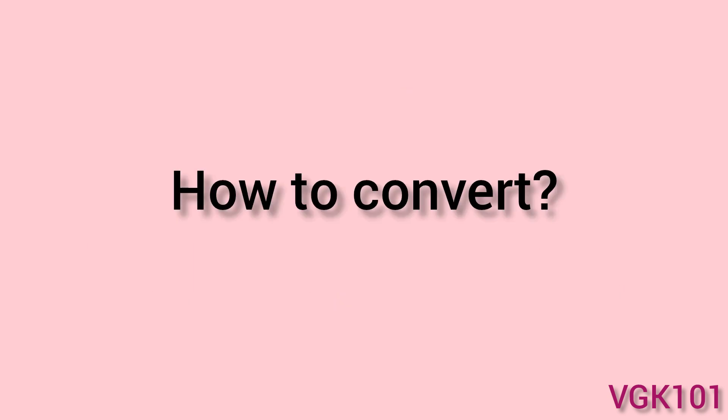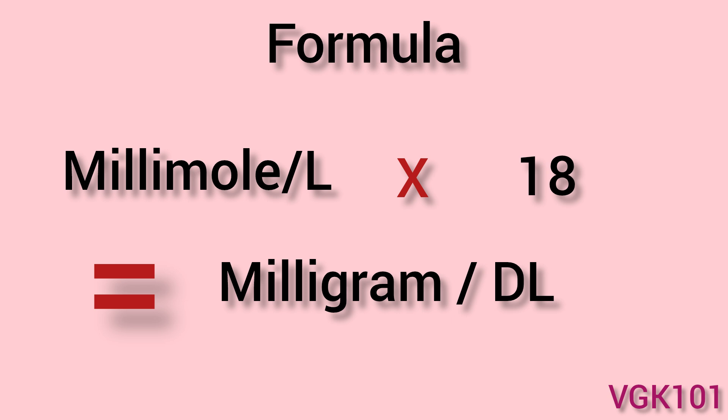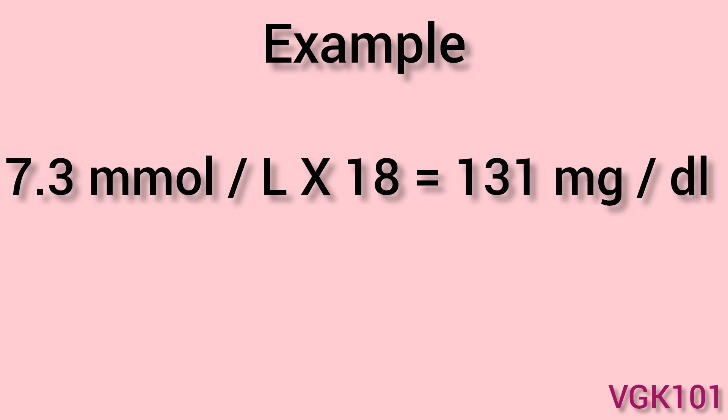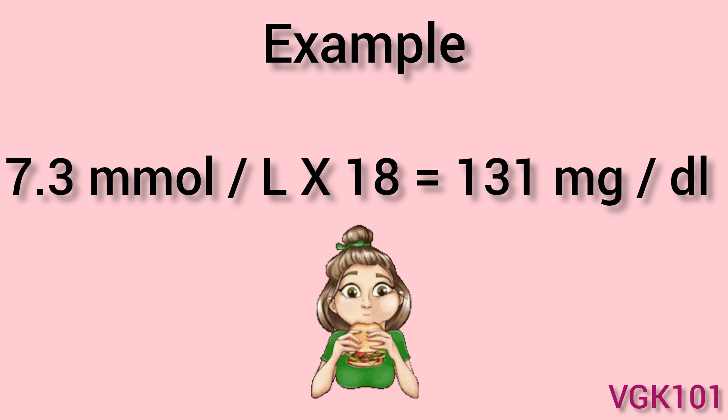To convert millimoles per liter to milligrams per deciliter, you need to multiply the millimoles per liter by 18. For example, 7.3 mmol/L times 18 equals 131 mg/dL. This was my blood sugar result after eating.